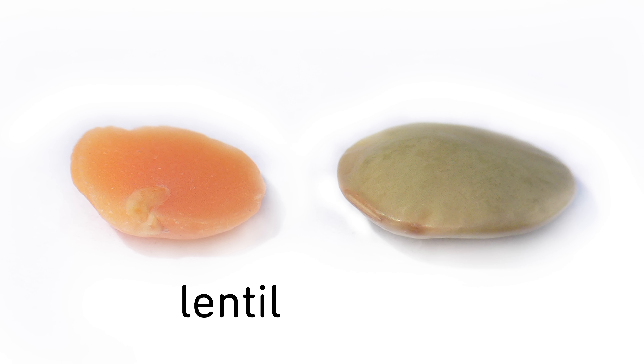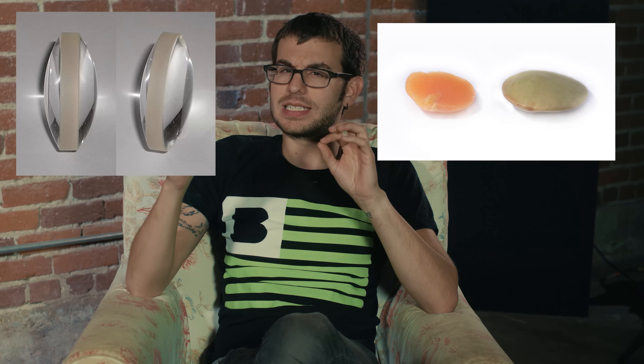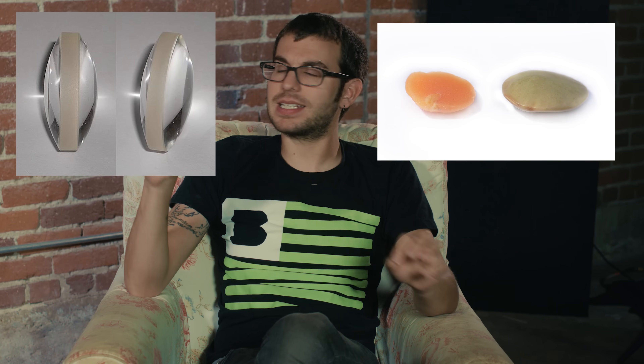Now, do you see this? This is a lentil, and the word lentil is where the word lens comes from. Lentils were never used to make lenses or anything, but they look a little bit similar as the basic lens shape. Legumes are a tasty treat. Anyway, lenses are really any curved glass that bends the light that passes through it.